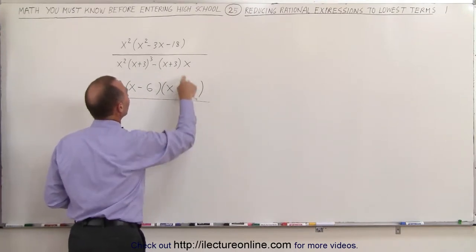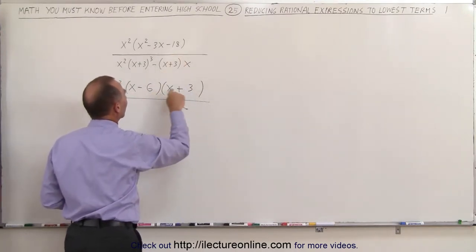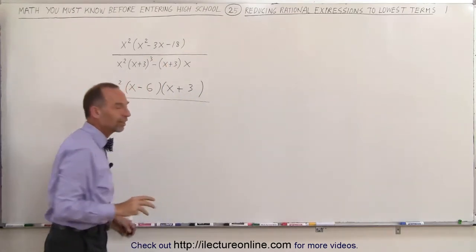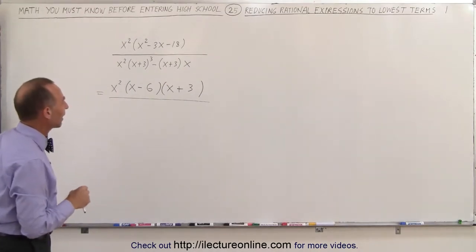Negative 6 times 3 is a negative 18. Negative 6 plus 3 gives me, or I should say, a negative 6x, and a plus 3x gives me a negative 3x. So that's the proper or the correct factored form.